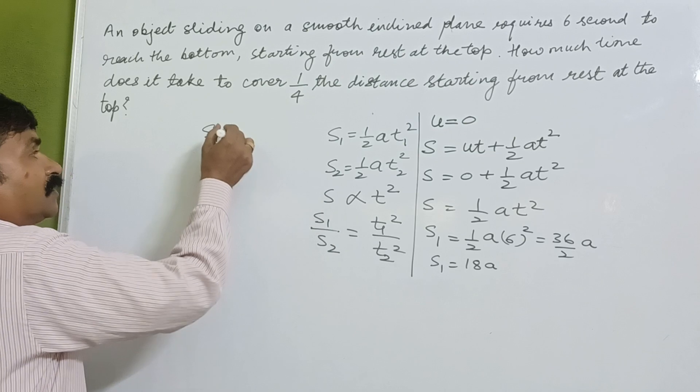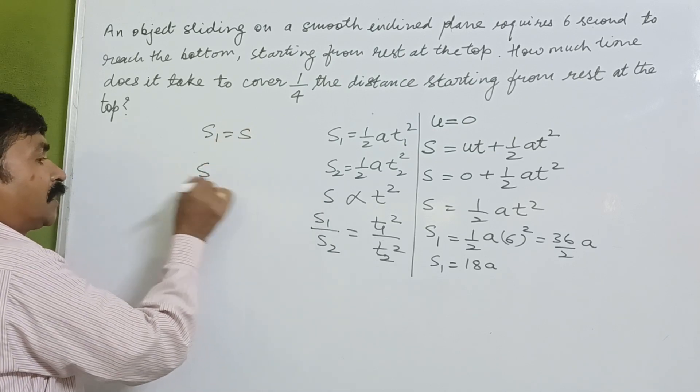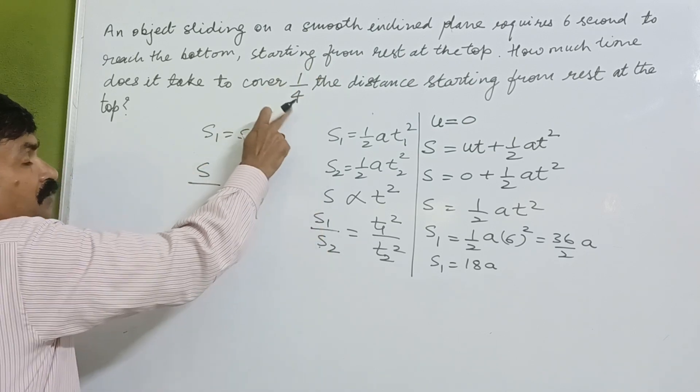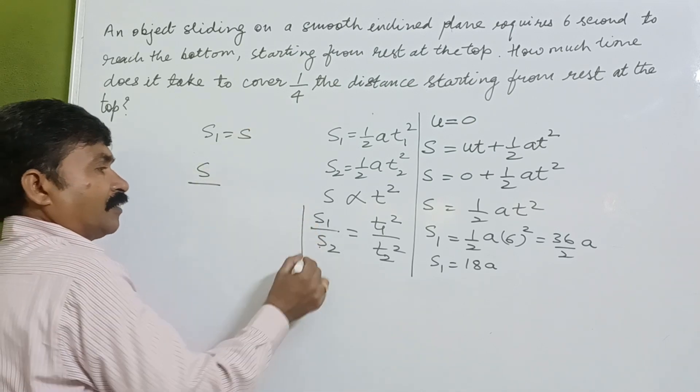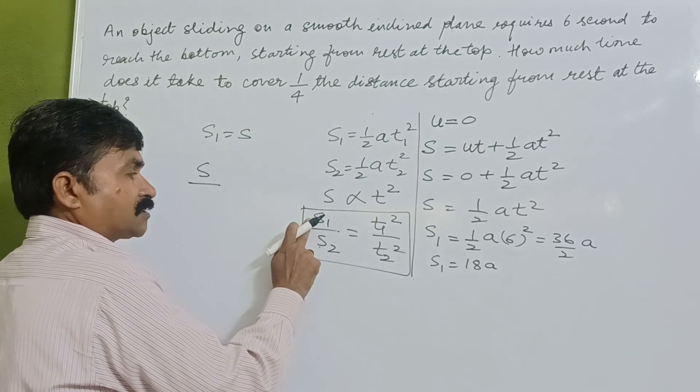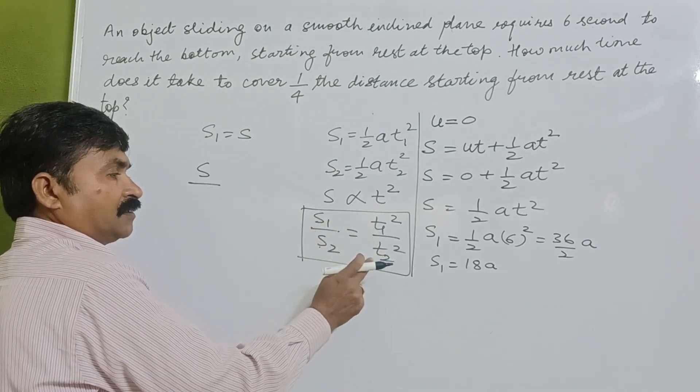If we assume s1 equals s, then s2 is one-fourth, as given in the question. This is the general formula we have: if we know the distance and this time, we can determine either time or distance.